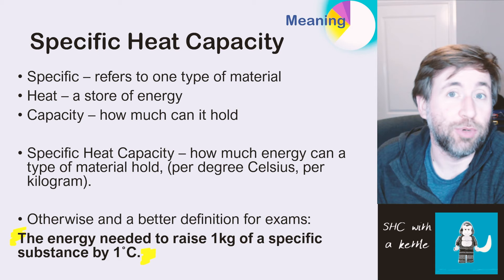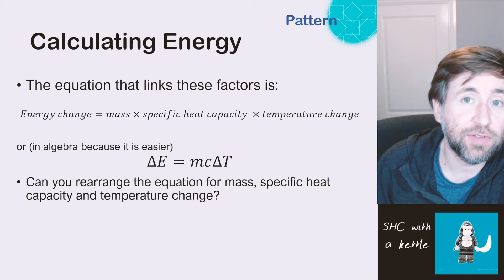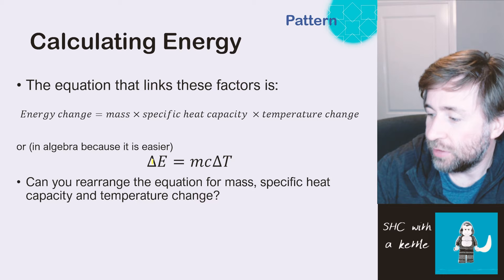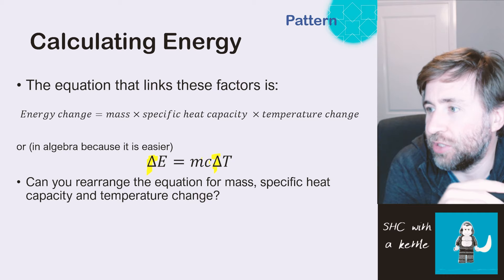This is the equation, and you don't need to memorize it for GCSE. You just need to be able to pick it out and use it. The energy change, so the energy supplied to something, is equal to the mass times specific heat capacity times by the temperature change. Or we can write this in algebra, delta, that's the funny triangle thing, delta E is equal to mass times specific heat capacity times delta, the change in temperature. So those triangles, those deltas, just mean change in.